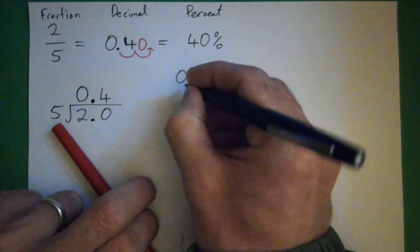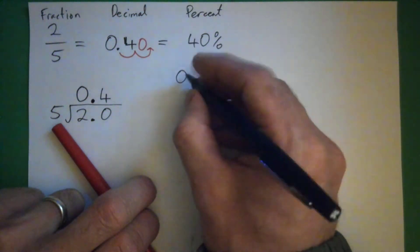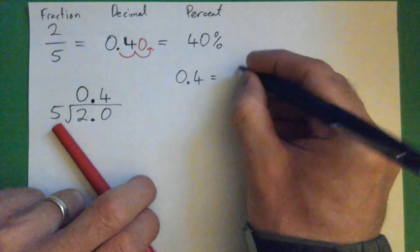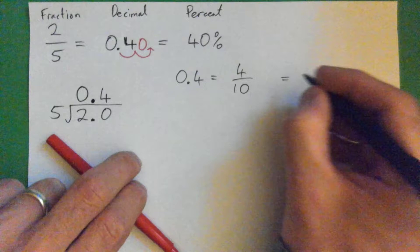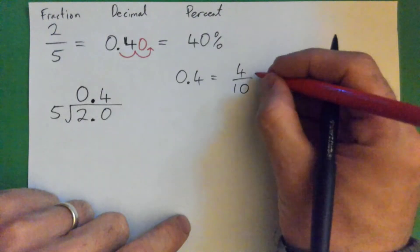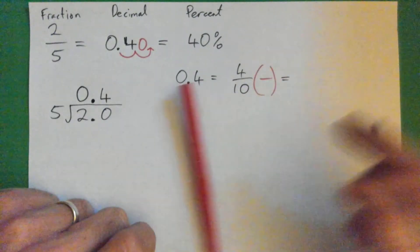Also, zero point four, of course, is four-tenths. And percent means per hundred. So, what would I multiply that by to get hundred on the bottom?